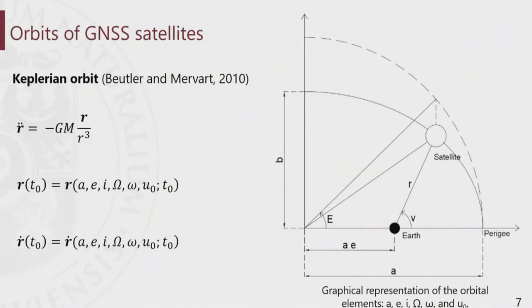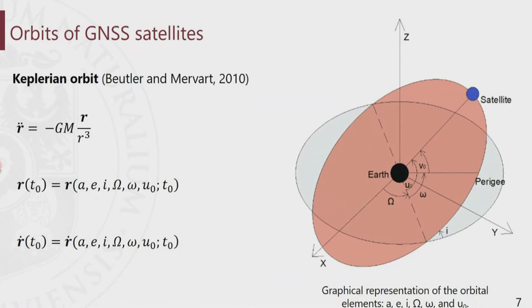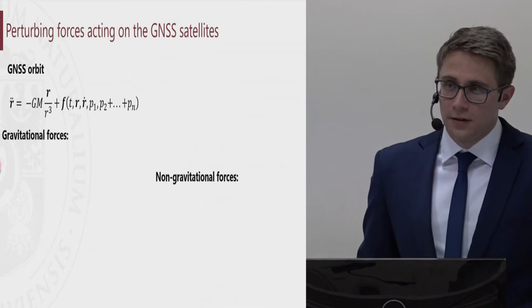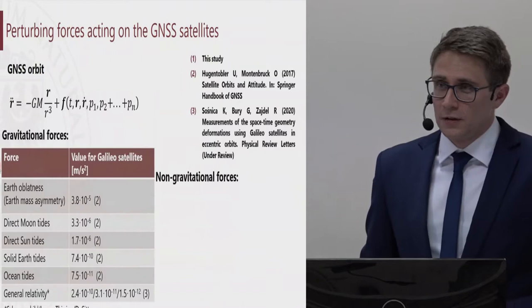The unperturbed orbit of the GNSS satellite can be expressed by the so-called equation of motion. This depends on the GM product and the state vector. The state vector consists of Keplerian parameters referred to a particular epoch T0. The first two parameters describe the size and shape of the orbit, whereas the angular parameters describe the orientation of the satellite plane with respect to the Earth's equatorial plane. These Keplerian parameters are estimated during the processing. However, the equation of motion has to be extended by a function of perturbing forces, which are well known and modeled with relatively high accuracy.